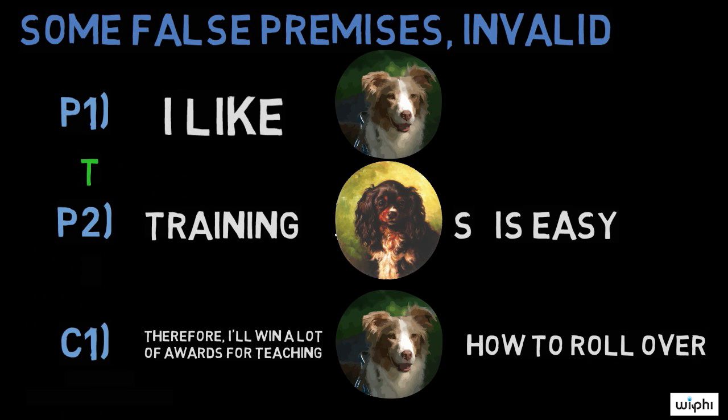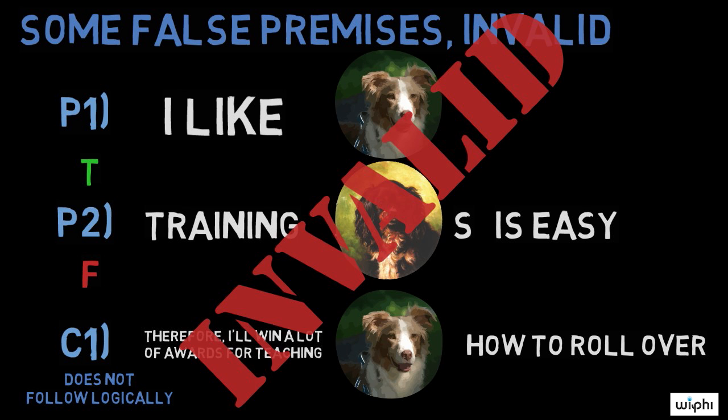In this example, not only is premise two false, but the conclusion does not follow logically from the premises.